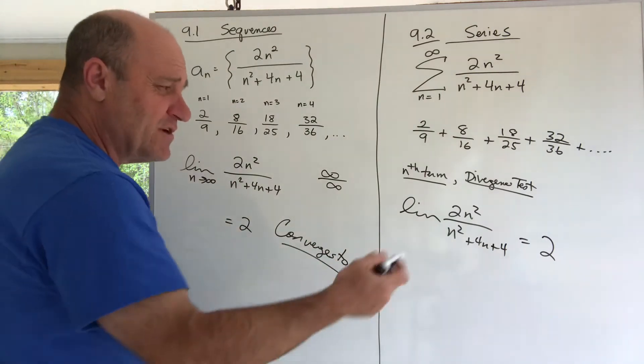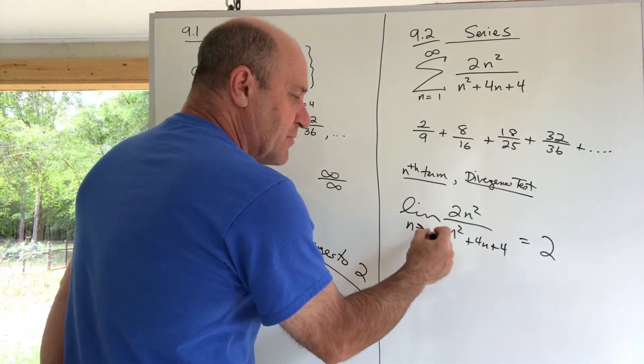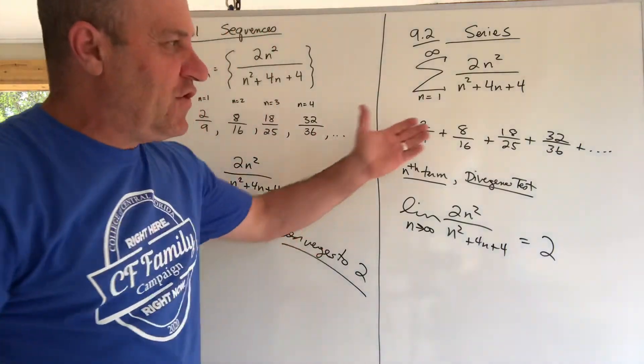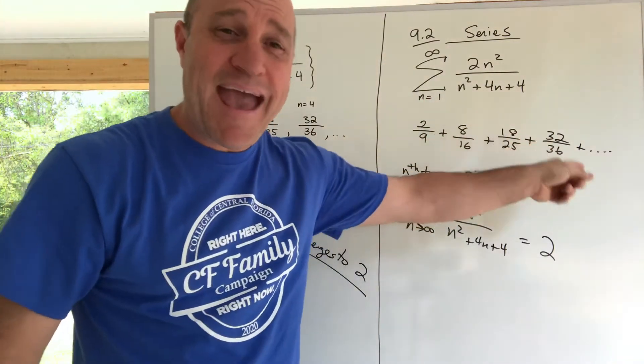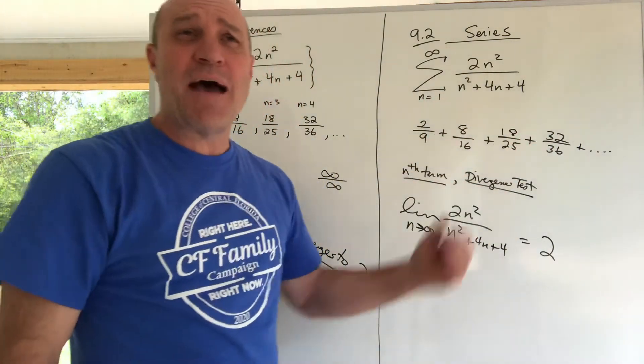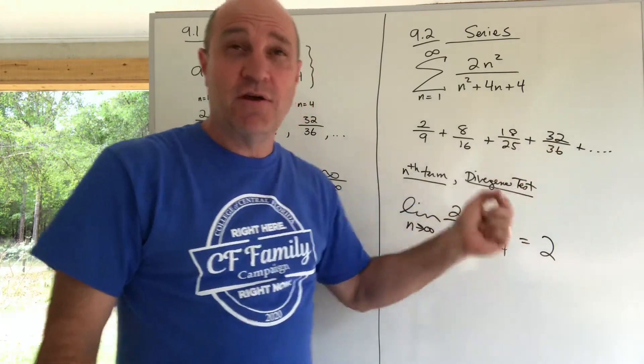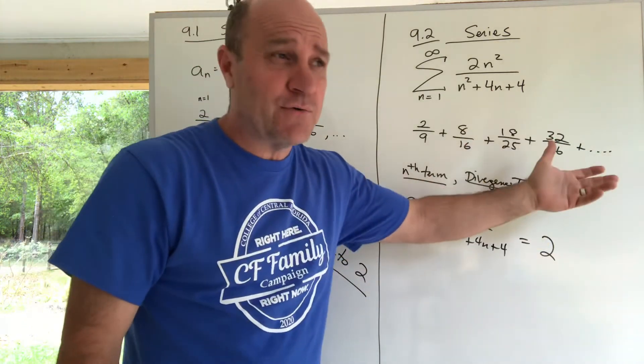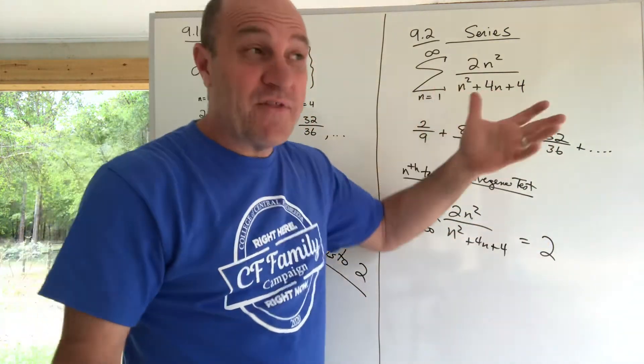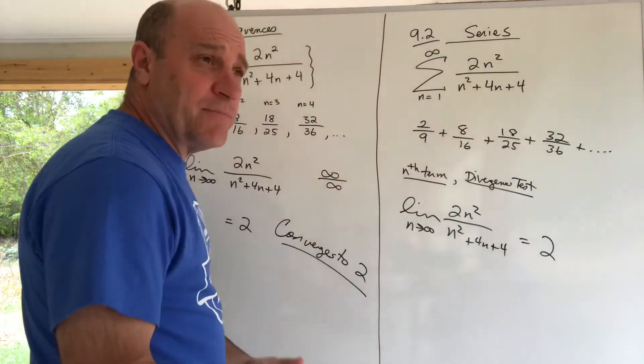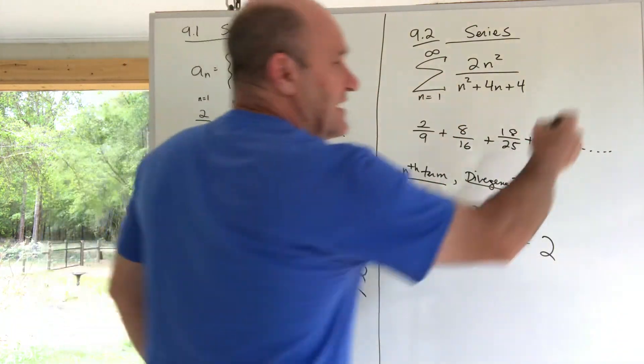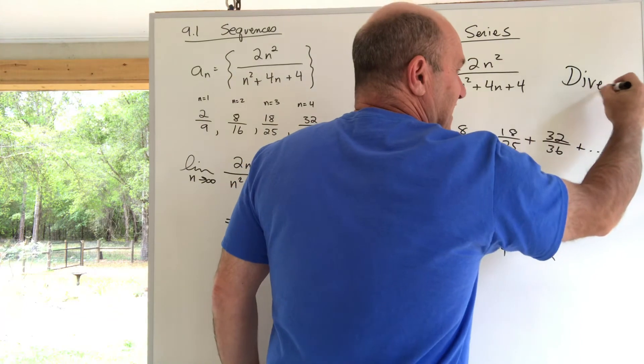But unlike the story of sequences, where when you get 2 that's what it converges to, what we just learned is that these terms approach 2. And if the terms are approaching 2 and I'm adding them, then eventually I'm out there and I'm adding 2 + 2 + 2 + 2 infinitely. What will that add up to? That adds up to infinity, and this series definitely diverges.